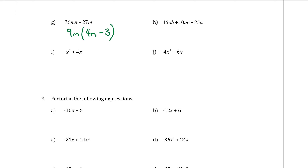Example H: it works with three terms as well — we just need a factor that works for all three. The HCF is 5, and there's an A in all three terms, so 5A comes out. Open the bracket, one term at a time: 15 divided by 5 is 3, the A moves out so B stays inside — 3B. Plus, 10 divided by 5 is 2, A goes out so C is inside — 2C. Minus, 25 divided by 5 is 5, and the A has been taken out. So we get 5A(3B + 2C − 5).